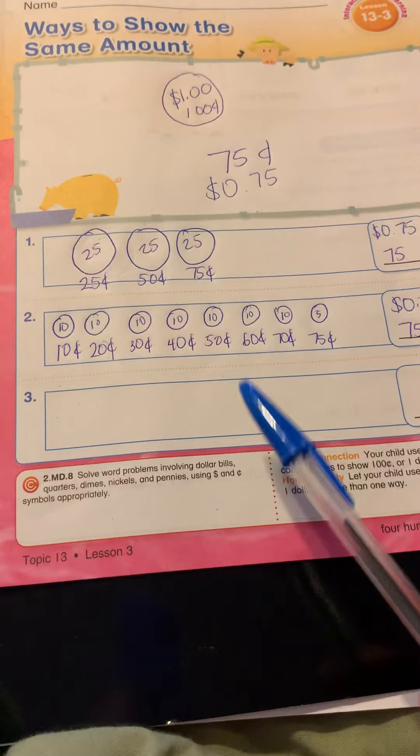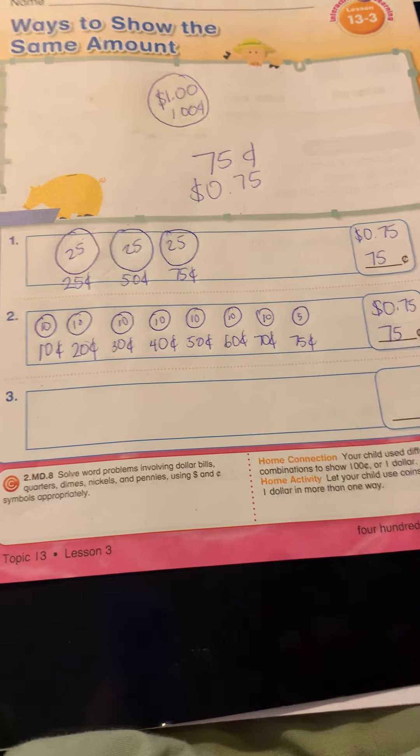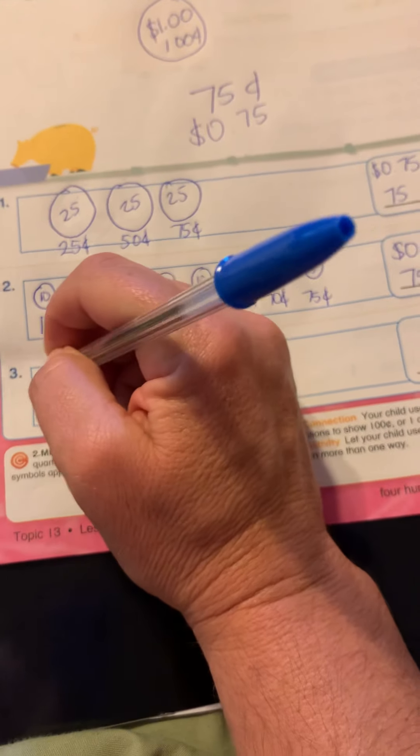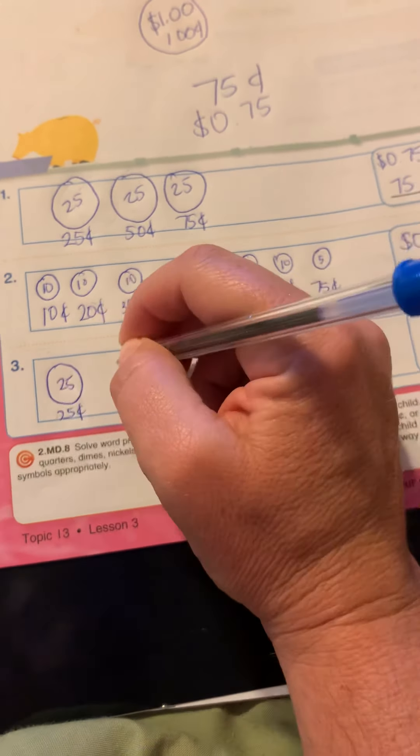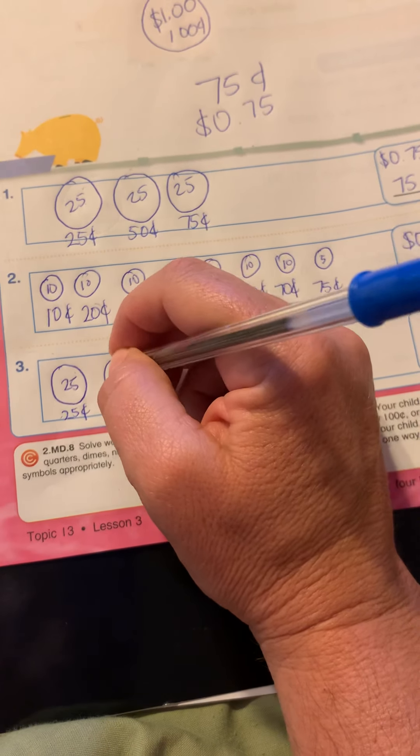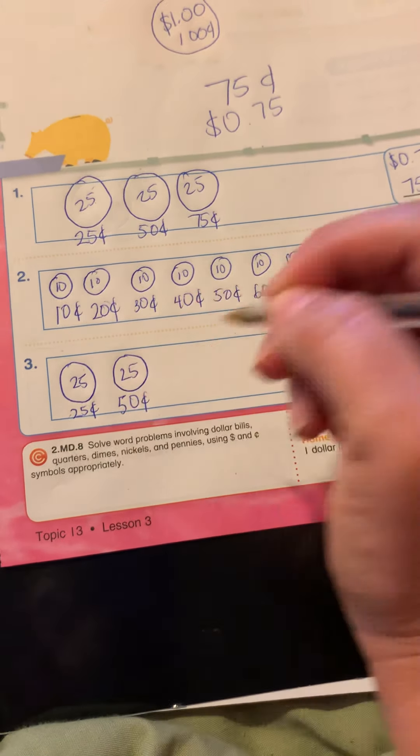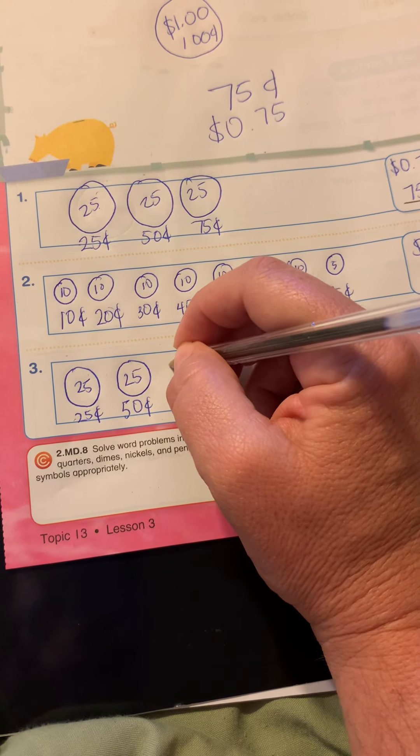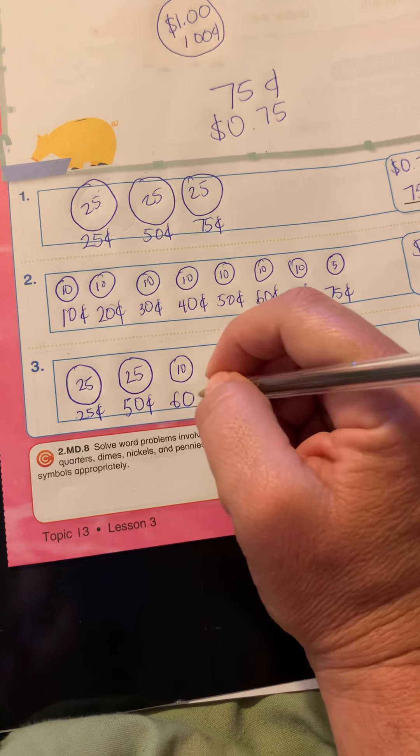Okay, and I'm going to do a last way. If you want to do a different way on number three you can do a different way. Remember, you're not writing till we're done, but I'm going to go ahead and do another one. So I could do 25, another quarter which is now 50, and then I could do 10 which would be 60.